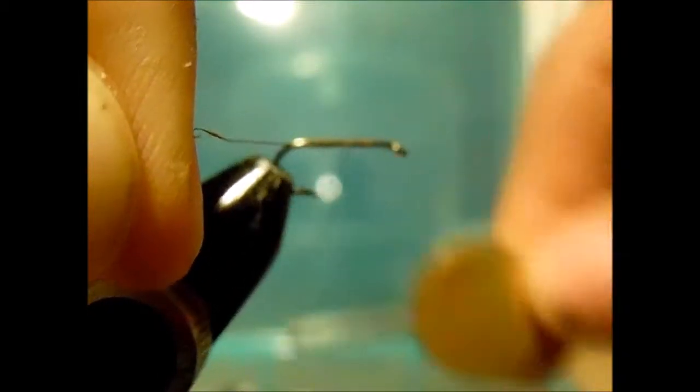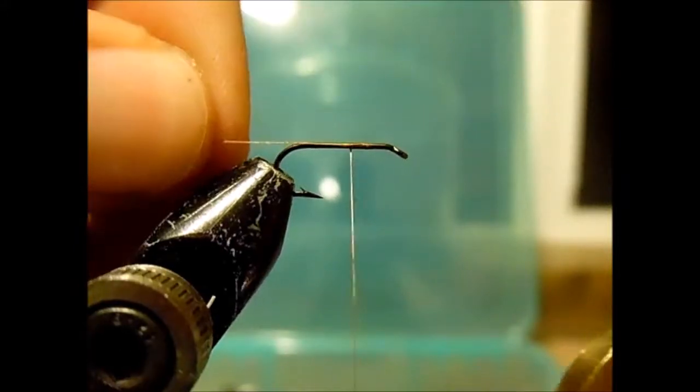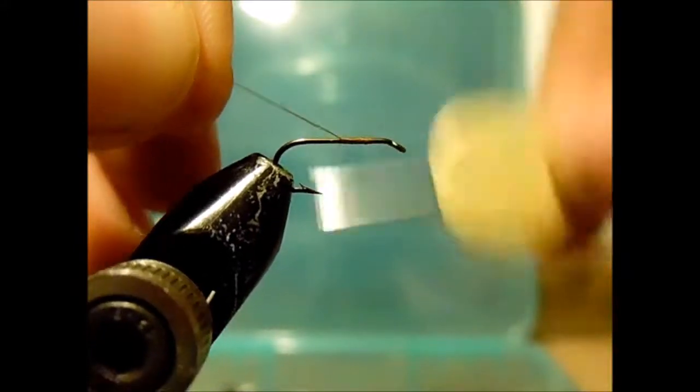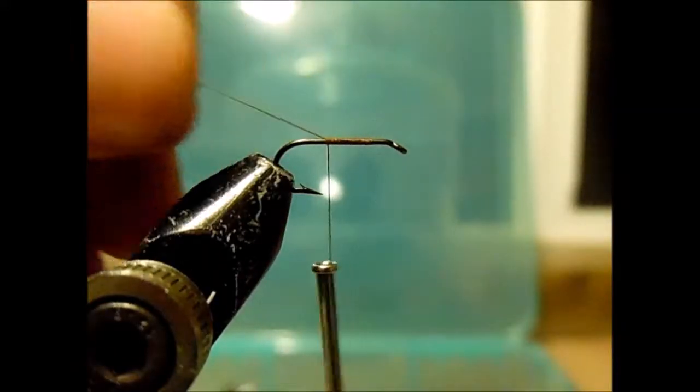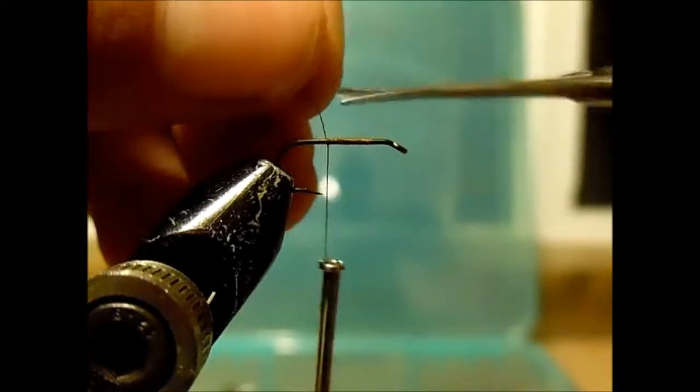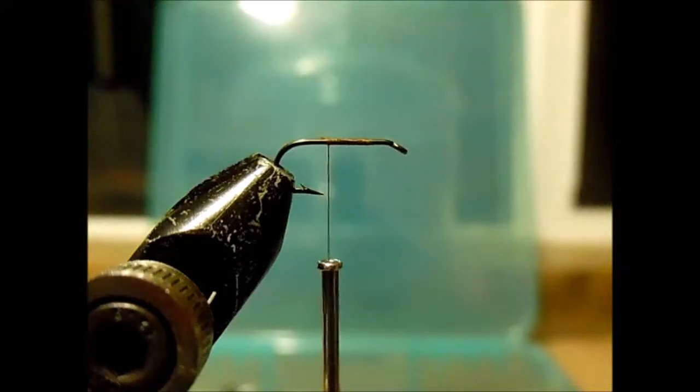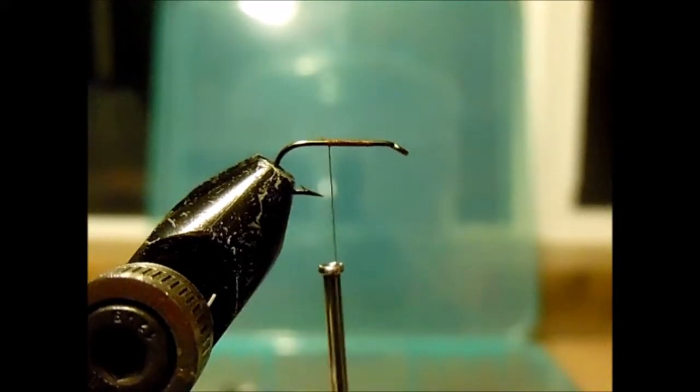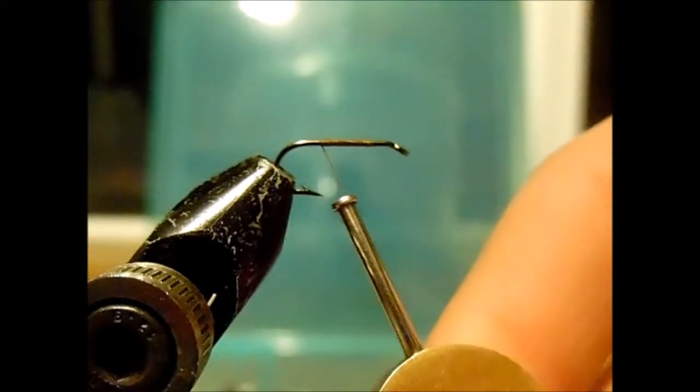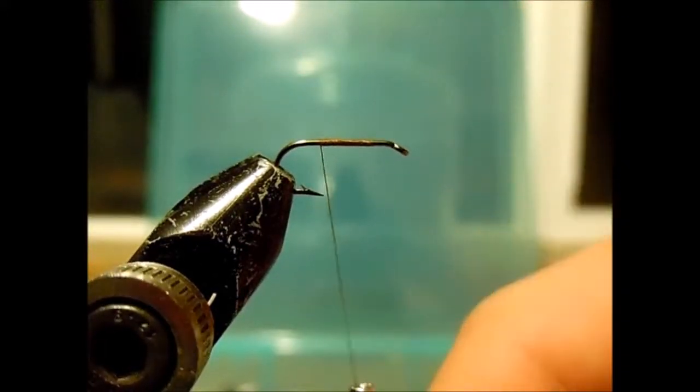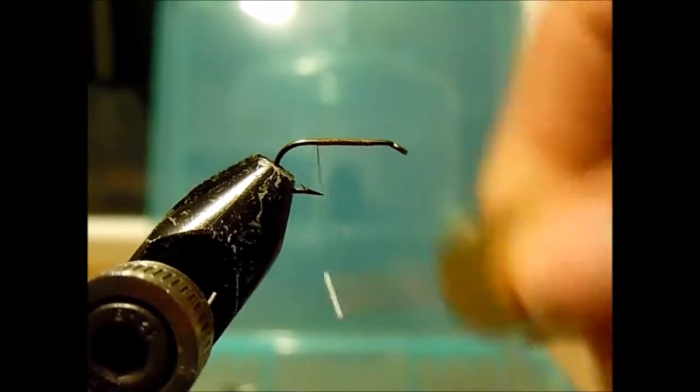Then we will take our thread, I think this is brown thread, and we'll start angling our way back towards the end of the hook. Over top of our tag end, make our scissors, and we'll snip off the tag end. Just wrap over that spot that we had snipped off on. Just sort of cover that up and make it nice and flat.